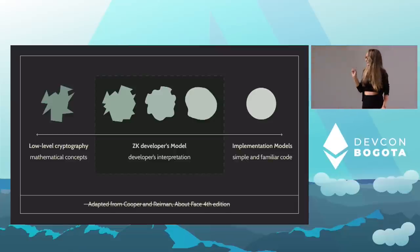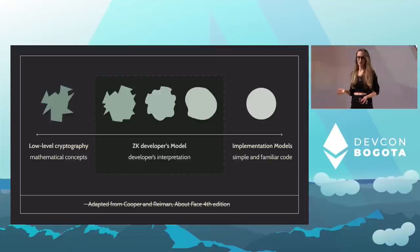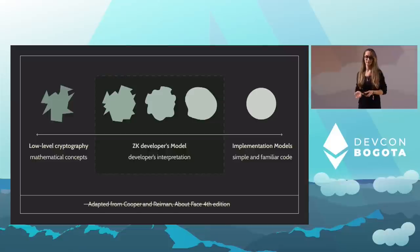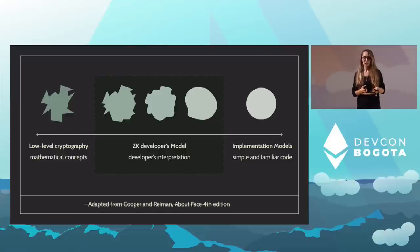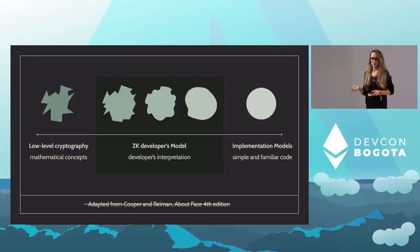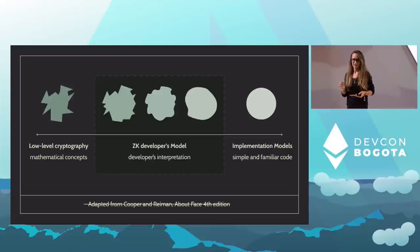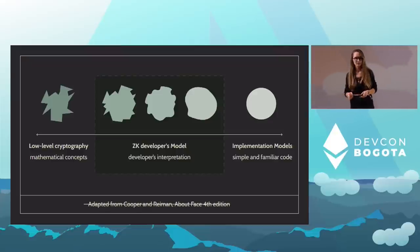A really interesting aspect of this is that developers on my team encounter a similar journey when they create programmable cryptography — they start with mathematical proofs, which they abstract into simple and familiar code. Both developers and designers on our team are on this similar journey, transforming abstraction into something familiar and usable. Let me give you an example of how this plays out.